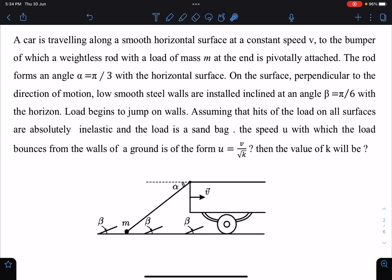A car is traveling along a smooth horizontal surface at constant speed v, to the bumper of which a weightless rod with a load of mass m at the end is pivotally attached. The rod forms an angle α with the horizontal surface. On the surface perpendicular to the horizontal, low smooth steel walls are installed inclined at angle β. Load begins to jump on walls, these speed breaker or bump kind of things.